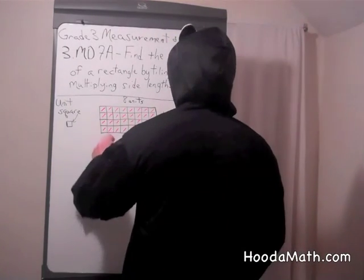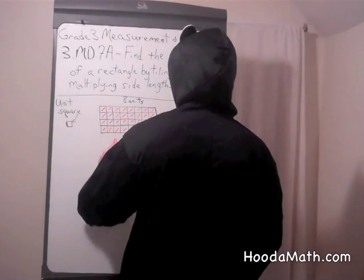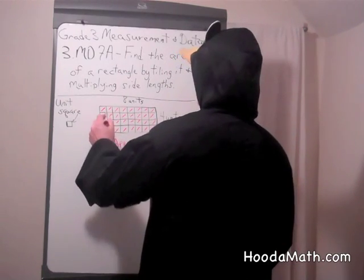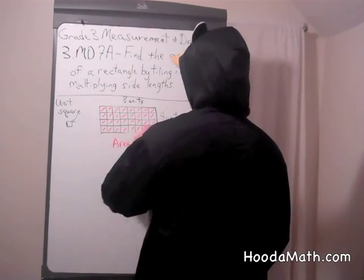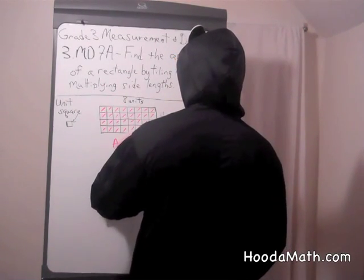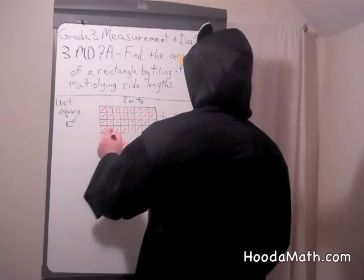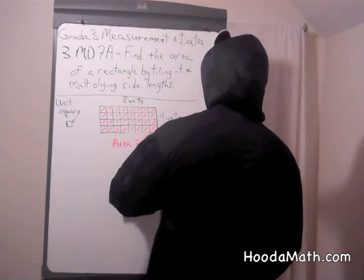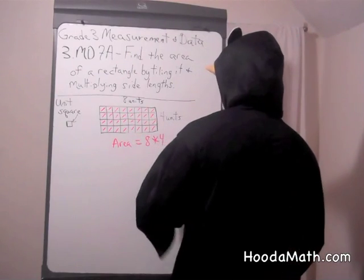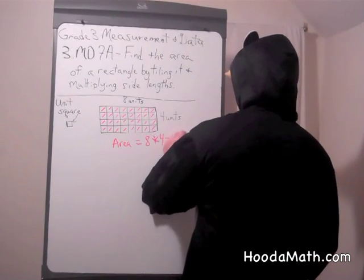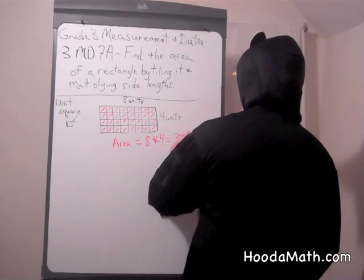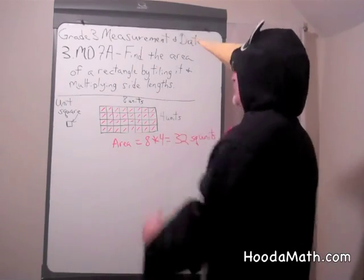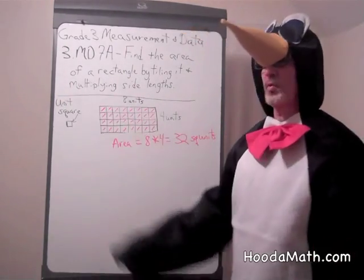The other way, you can get the area of a rectangle by multiplying its dimensions, or its length times its width. In this case, 8 units times 4 units, which gives us 32 square units, or 32 unit squares.